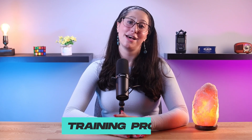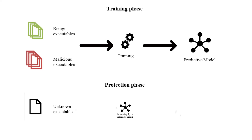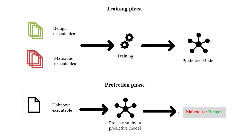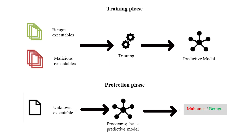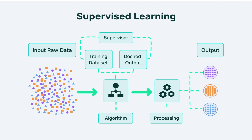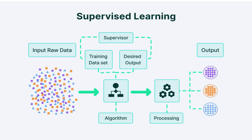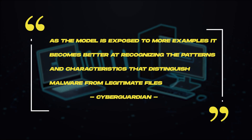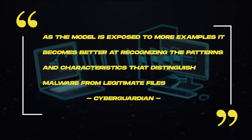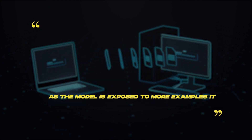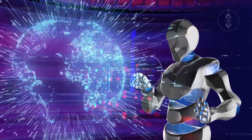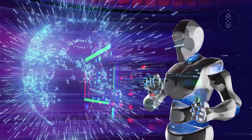Now let's move on to the core of machine learning: the training process. During this phase, the machine learning model is exposed to the labeled data set, where it learns to make distinctions between malicious and harmless files. Supervised learning techniques are often used, where the model is provided with labeled examples and adjusts its parameters to minimize the difference between its predictions and the actual labels. As the model is exposed to more examples, it becomes better at recognizing patterns and characteristics that distinguish malware from legitimate files. It is this ability to learn and adapt that makes machine learning a powerful tool in the fight against malware.